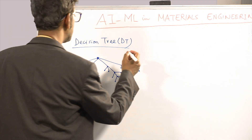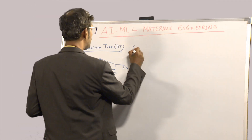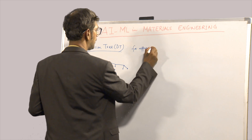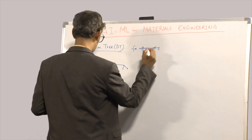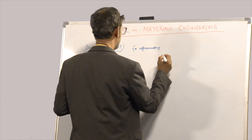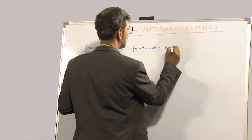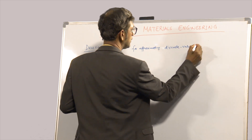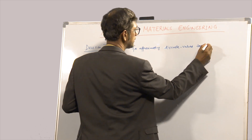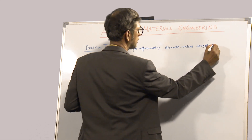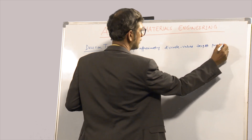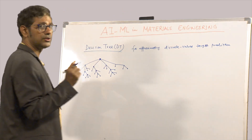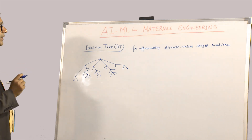Decision tree is basically used for approximating discrete-valued target prediction. Remember this — discrete-valued target prediction. It is not continuous value; you want to predict something using this approach.